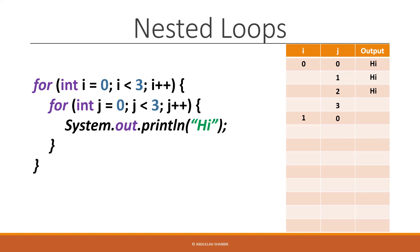We check if j is less than three — it is — and we start printing again. "High" gets printed, we reach the closing bracket of the inner loop, increment j from zero to one, check if it's less than three, and print "high" again. We increment to two, check again, and print "high" once more. We increment j to three, check if j is less than three — it's not — so we skip to the closing bracket of the inner loop and move on.